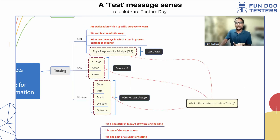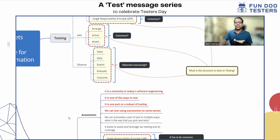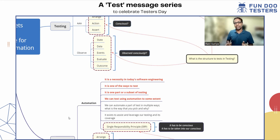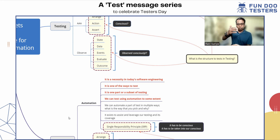What is the structure to the test in the testing that I do? Know this SRP, and second: what is the structure to the test in testing that I do? Now let us move on to automation. Automation is a necessity today in software engineering — there is no escape from it. And automation is one of the ways to test; it is one part of testing, a subset of testing.